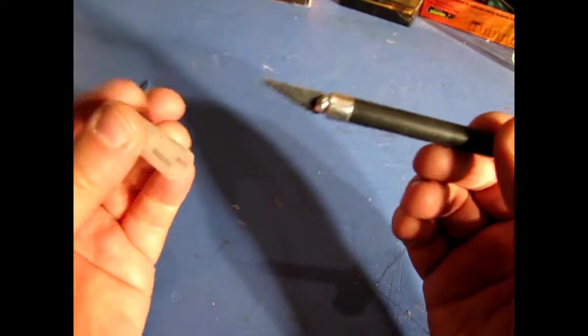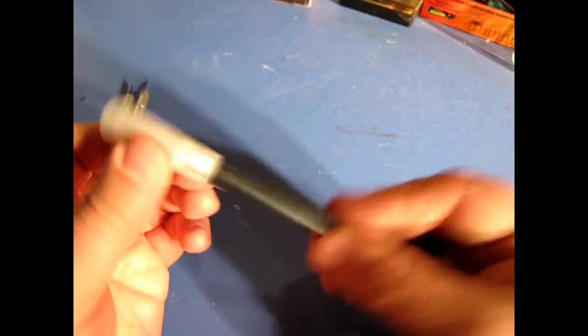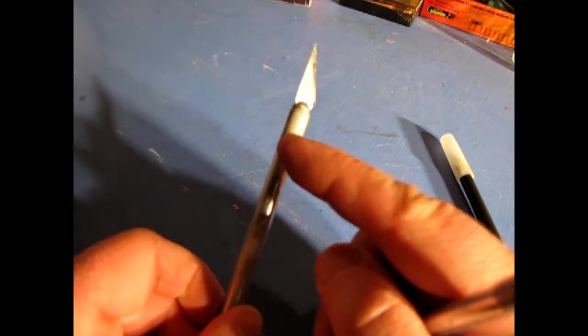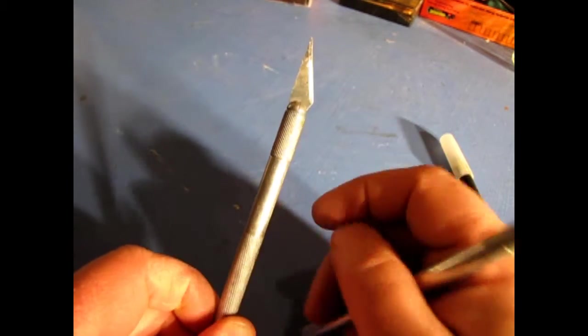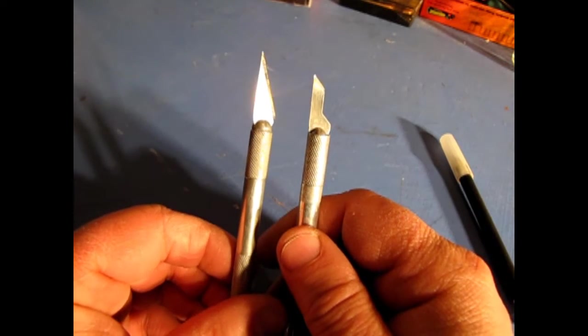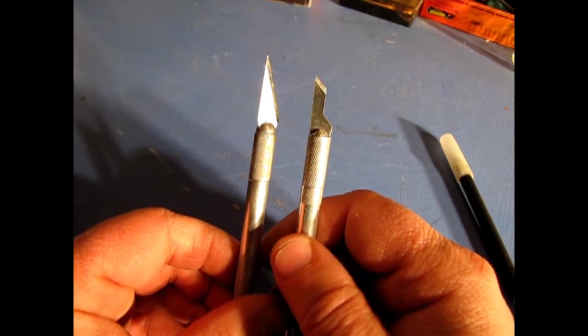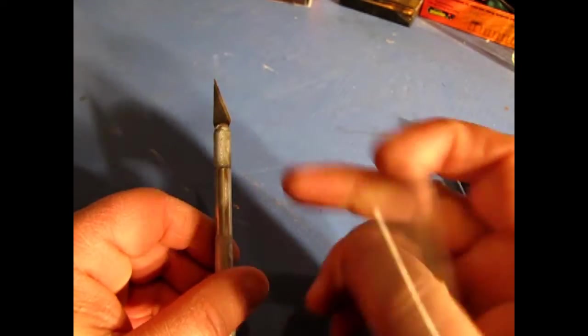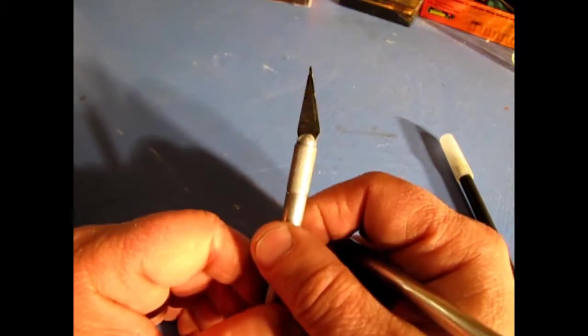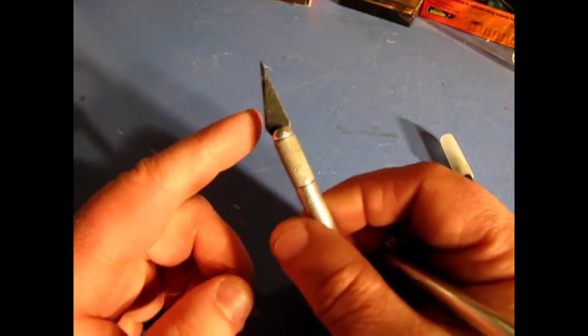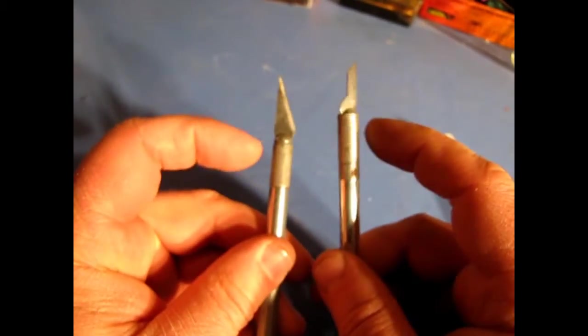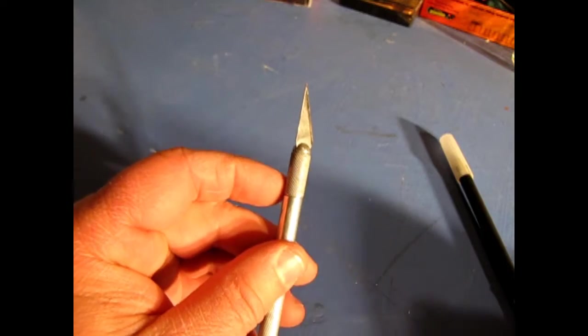So these two knives have a similar thing. This is a number 11 blade. And this is a number 16 blade. And as you can tell, one is angular and the other one is sort of truncated angular. This is a good knife here to push down and clip parts off of your part tree. This is a good knife for scraping along edges like that sort of thing.